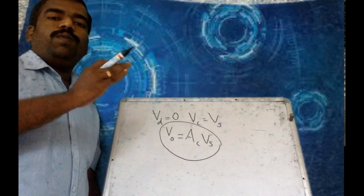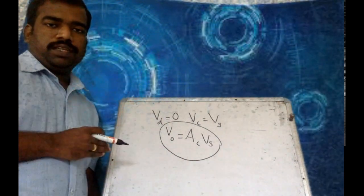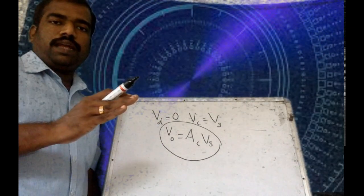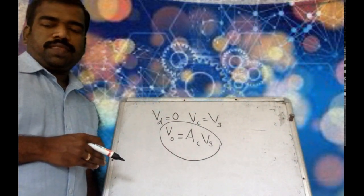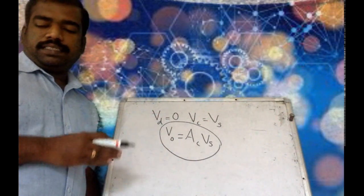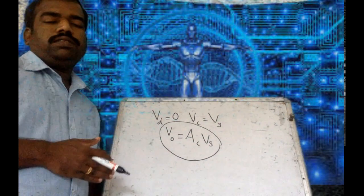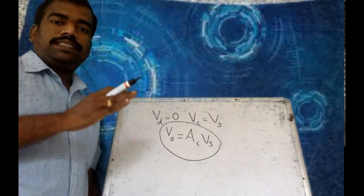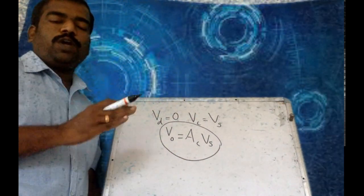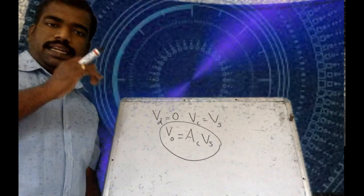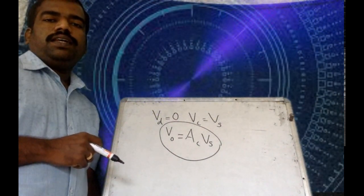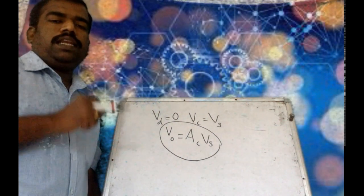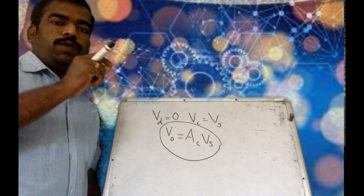Here comes the common mode rejection ratio. When both input signals applied to the input terminals of the operational amplifier are the same, common mode operation results. For an ideal operational amplifier, the common mode output voltage must be 0. But in practice, you get a small signal at the output due to common mode operation, so for a practical amplifier, this common mode operation is minimum.